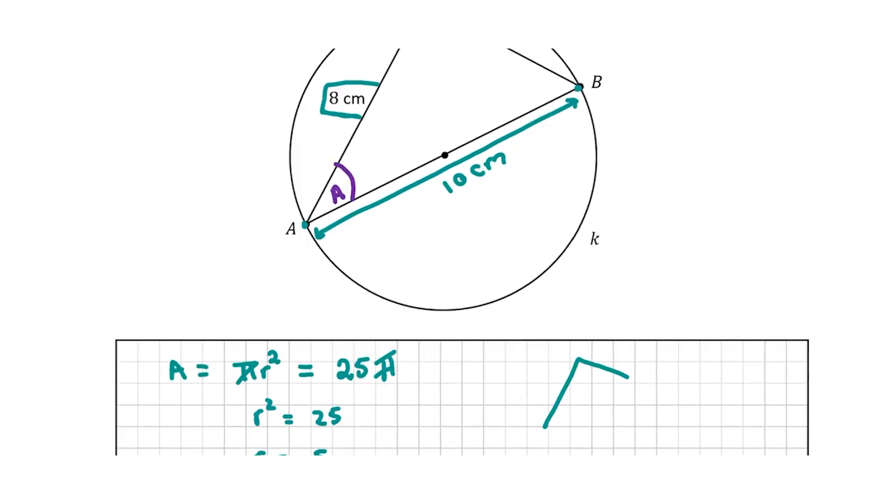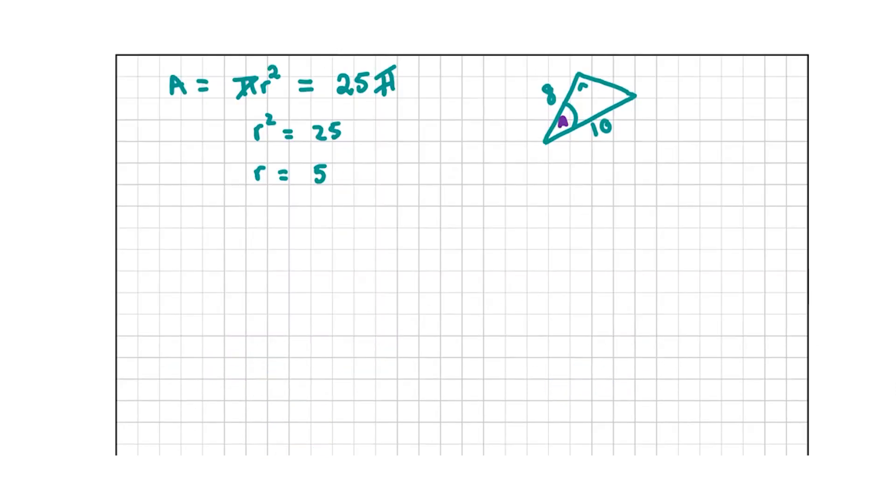So now we have our triangle. I'm just going to bring the triangle down here and draw it. We can use our trigonometric functions to find an angle in a right angle triangle. Just to remind you of those, it is sine, cos, tan. How I remember it is 'oh hell, another hour of algebra.' The sine of A is the opposite over the hypotenuse, cos of A is the adjacent over the hypotenuse, and tan of A is the opposite over the adjacent.